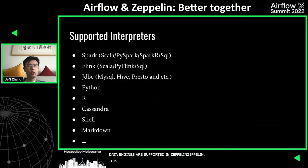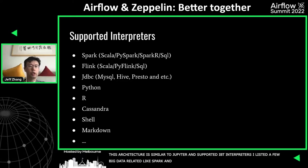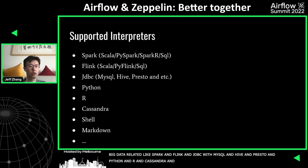Here are the supported interpreters. Most of them are big data related, such as Spark, Flink, and via the JDBC interpreter you can use Hive and Presto. From a languages perspective, you can write Scala code, Python code, R code, and SQL of course. You can also use Shell or Markdown for your code documentation.